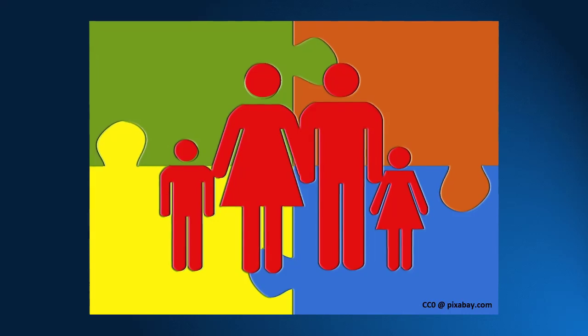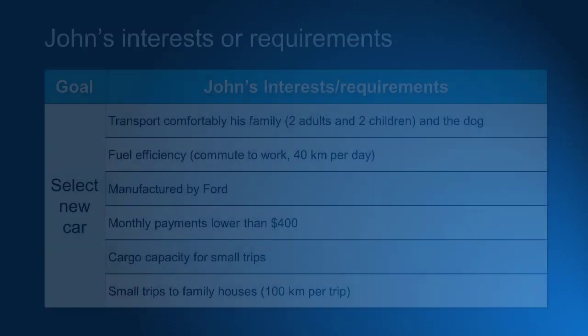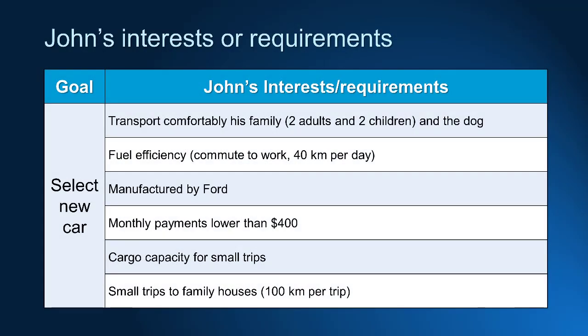The question is: how to find the most suitable alternative that better accommodates all family needs and desires? Let's see who is involved in the decision: John, his wife, a 10-year-old boy, a 7-year-old daughter, and a dog. John needs a car to drive every day to work, and monthly they visit relatives that live 100 km away.